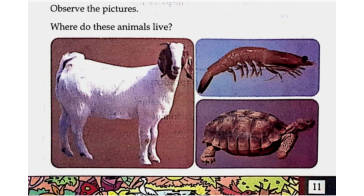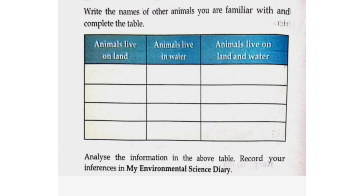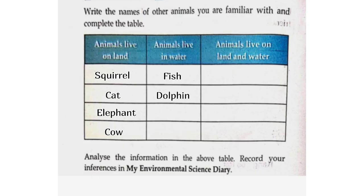Observe the pictures. Where do these animals live? Goat — land. Prawn — water. Tortoise — land and water. Write the names of other animals you are familiar with and complete the table. Animals that live on land: squirrel, elephant, cow. Animals that live in water: fish, dolphin, octopus.